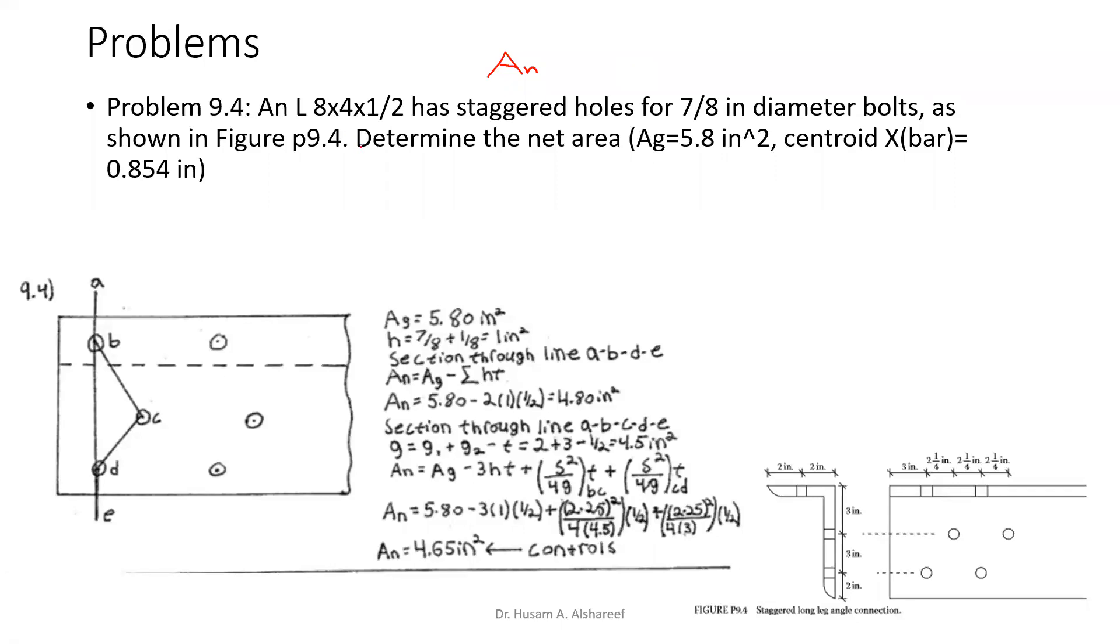Let's read the problem statement first. An L8×4×1/2 inch has staggered holes - again, this is staggered holes, not straight - for 7/8 inch diameter bolts. Determine the net area. The gross area Ag = 5.8 in² is given, and the centroid X̄ = 0.854 inches.